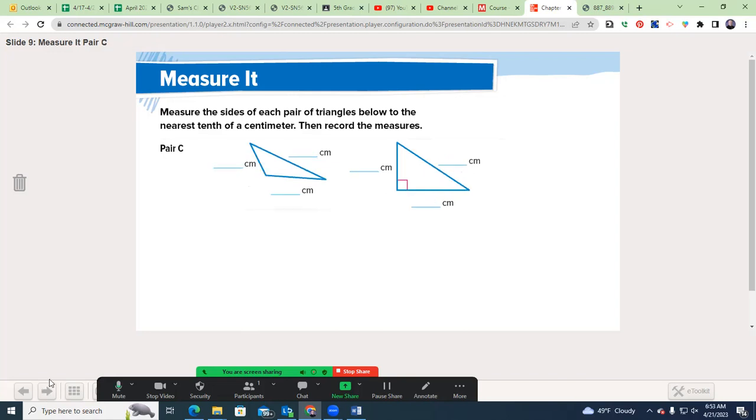All right, let's go ahead and do pair C. Same thing. Go ahead and measure. You may pause the video now. Welcome back. You see you had 1.5, 2.5, 3.5 on this obtuse triangle. And this right triangle is 2, 3, and 3.6. In this case, there are no congruent, so we call that a scalene triangle.